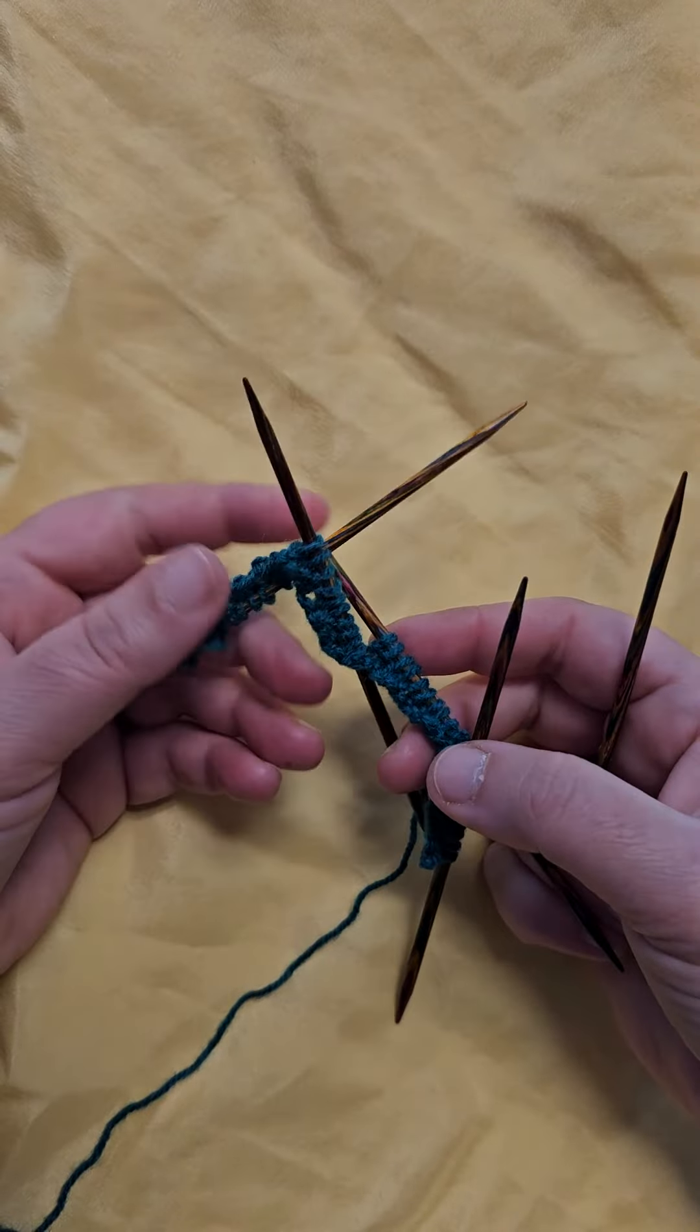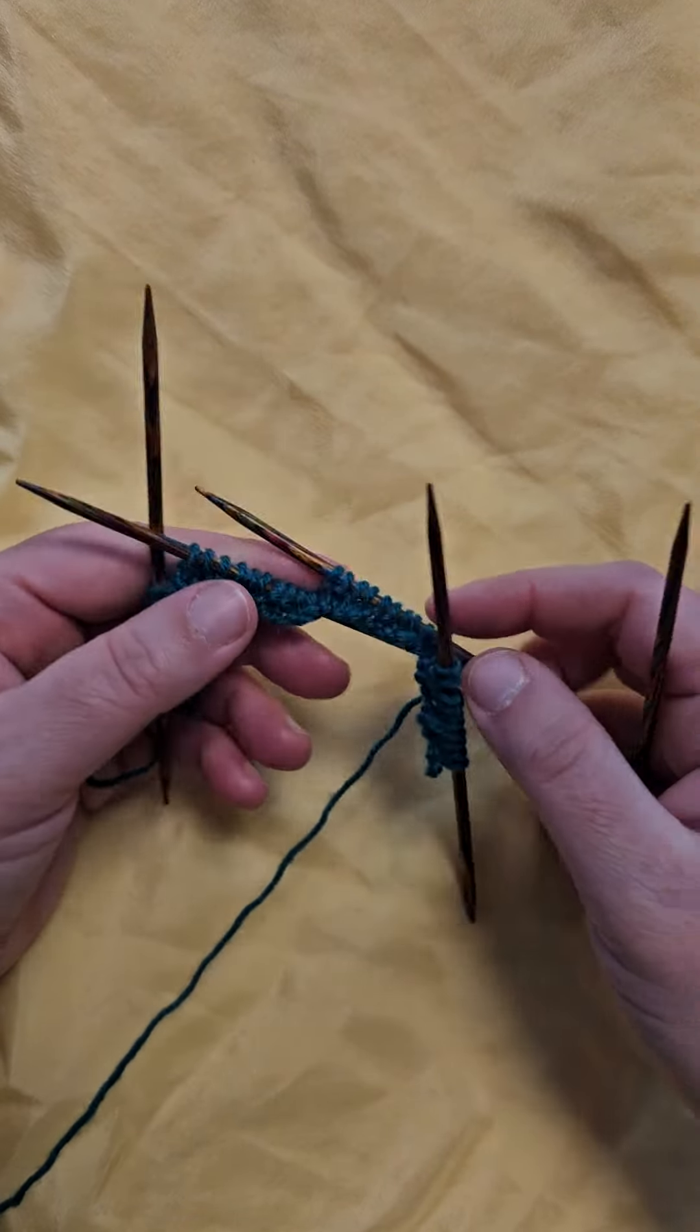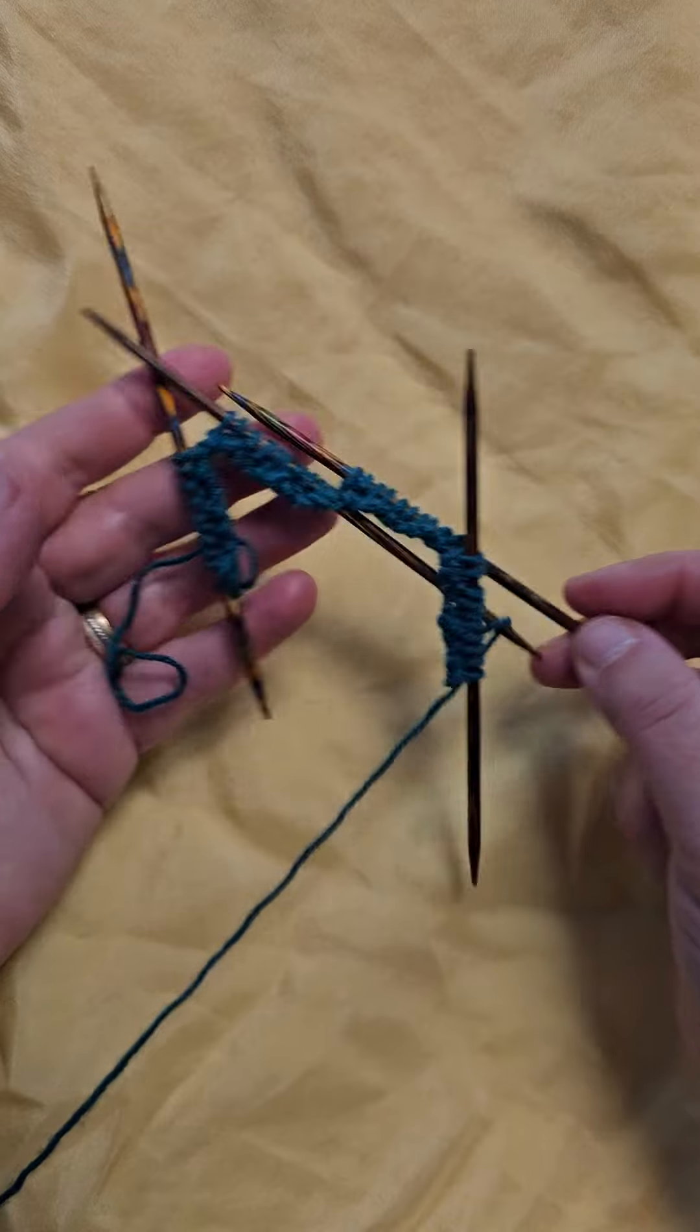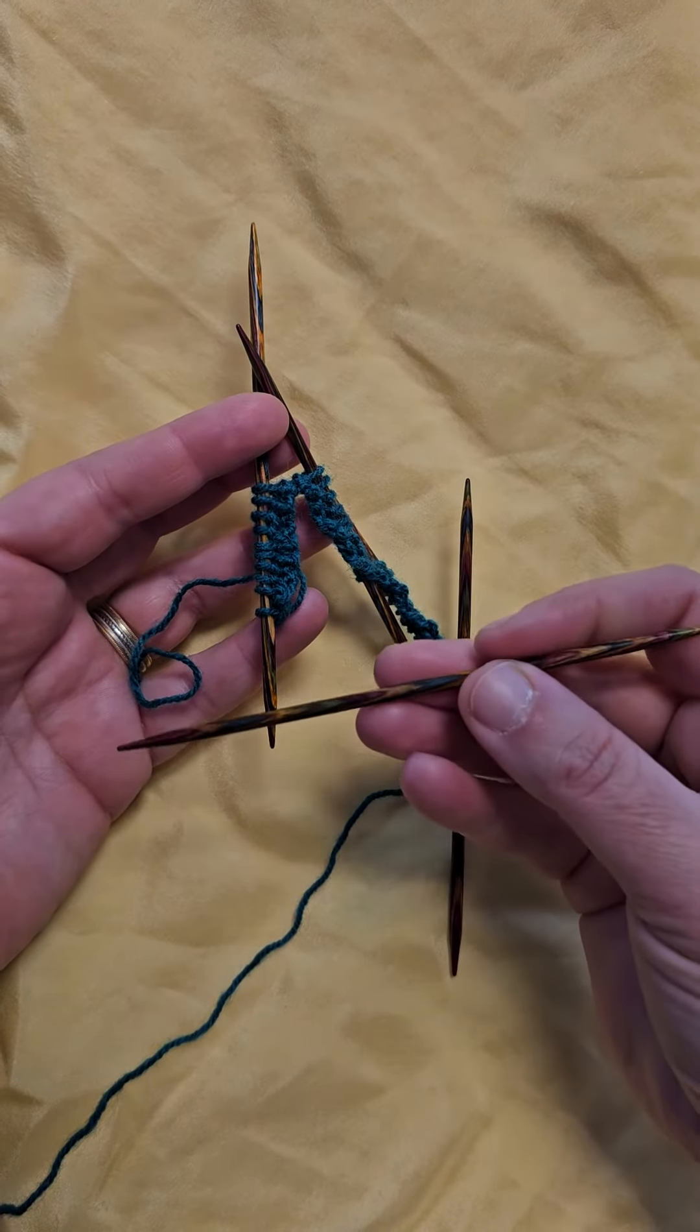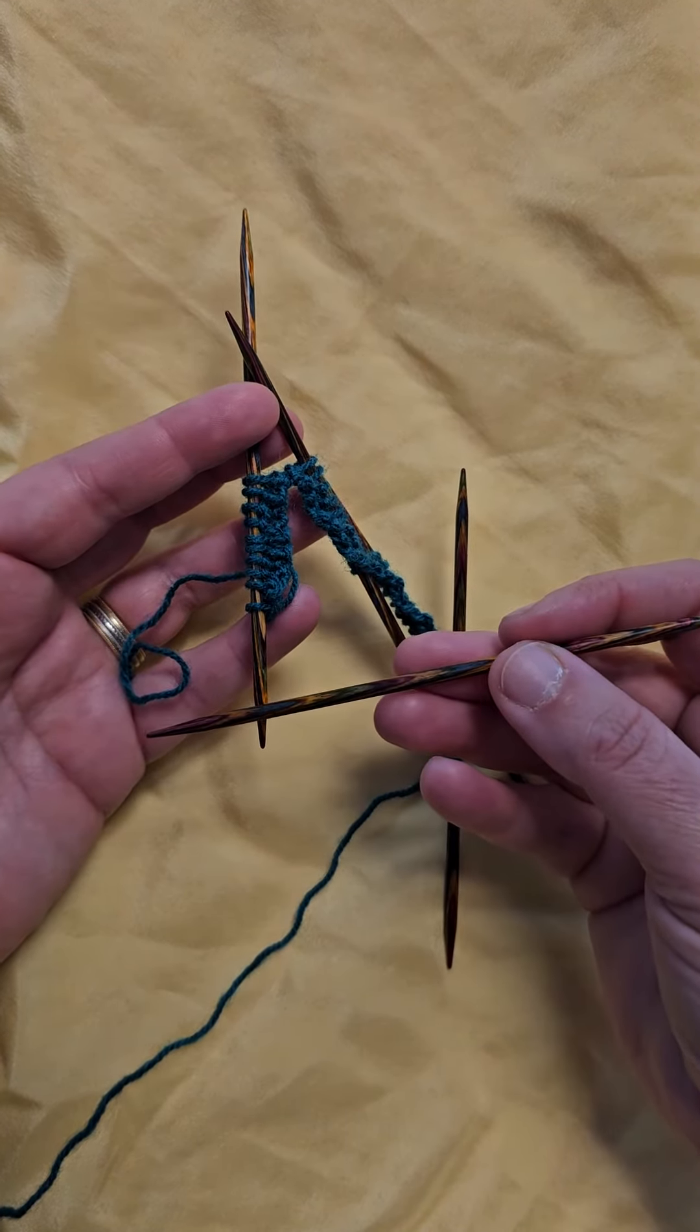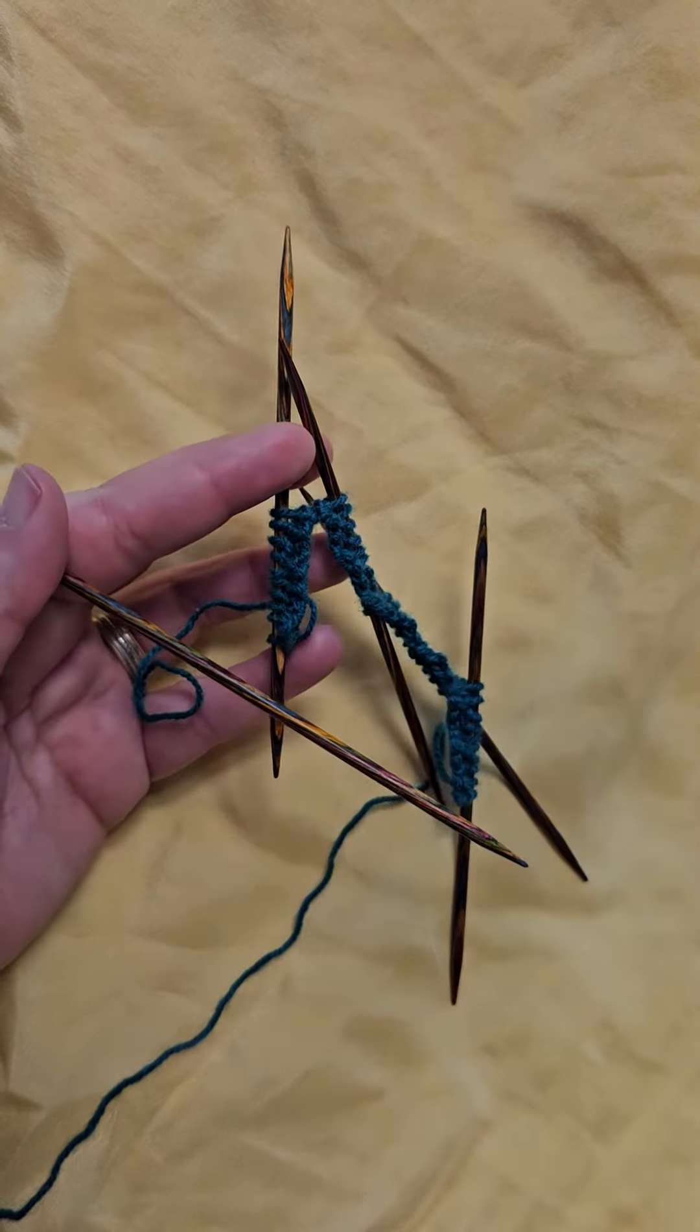You now have four needles with stitches on them, equal number of stitches on each needle and a free fifth needle. You're ready to connect the round.